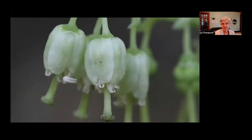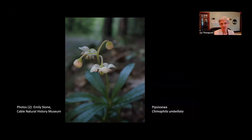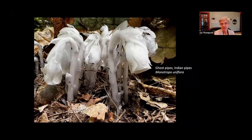Here's a closeup of one-sided pyrola. And another member of the Heath family is a beautiful one called Pipsissewa — another photo taken by my friend Emily Stone. Look at the closeup of that beautiful flower — just a fascinating thing. Those stamens are really unusual and interesting: those pink things are stamens that open up at the tip. Another closely related thing is what we call ghost pipes or Indian pipes, just emerging from the forest floor now.